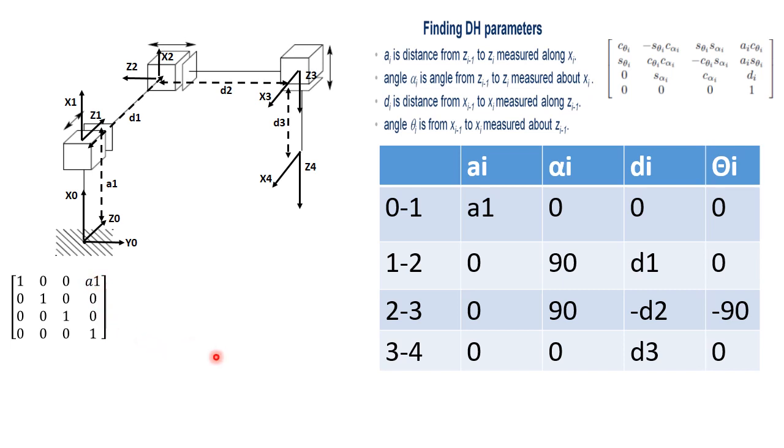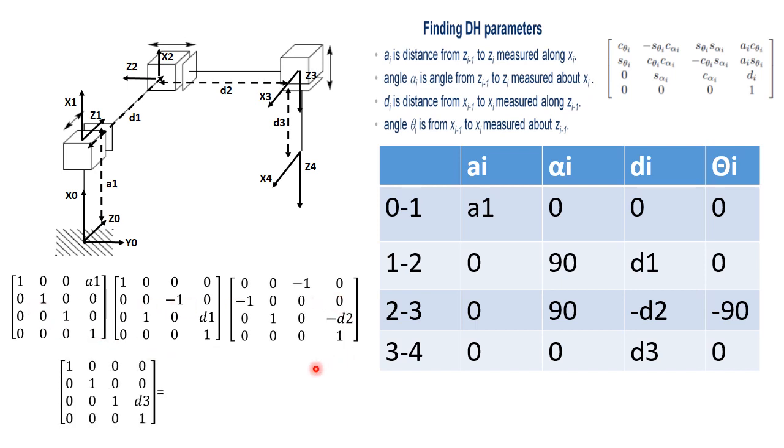And the remaining other three matrices are the same as before, which is for 2 to 3, 1 to 2 and 2 to 3, and 3 to 4. And if you multiply all these matrices, then you will end up with the result.